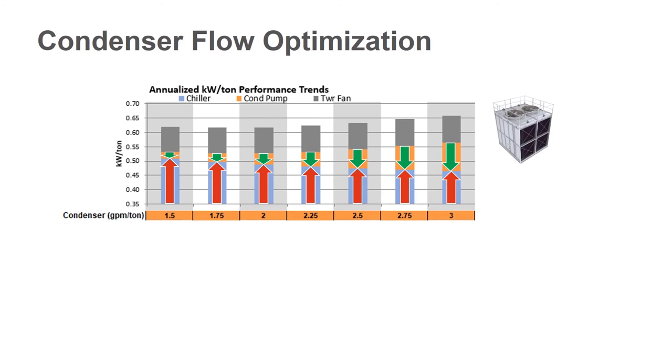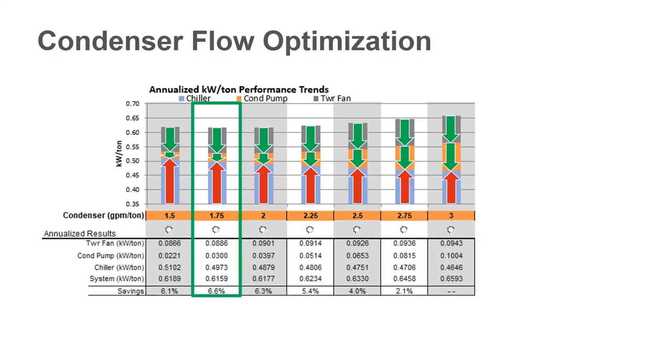The last one is the cooling tower. As we send the cooling tower warmer water, we're going to make it a more effective heat exchanger. And it's going to consume slightly less energy as we go to lower flow. Now, the optimized flow rate is going to be the lowest combined total of all three of these components. And for this system, we can see 1.75 GPM per ton has the lowest overall system energy. You can see we saved 6.6% over the base case 3 GPM per ton.